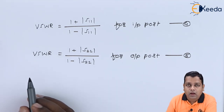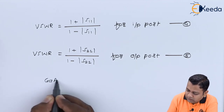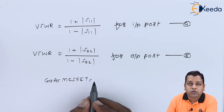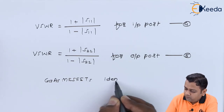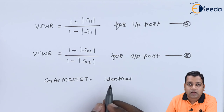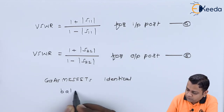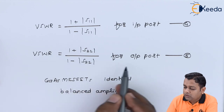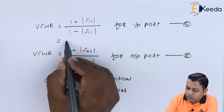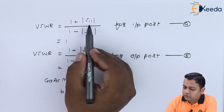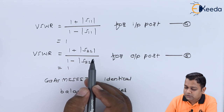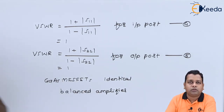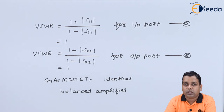If the two GaAs MESFET chips shown in the schematic diagram are identical, the amplifier is said to be balanced, and the VSWRs for the input and output ports will both equal 1. When we substitute S_11 and S_22 as zero, we obtain unity VSWR — this is the ideal or theoretical behavior of the device in this application.